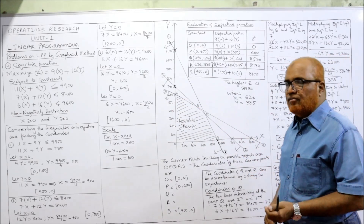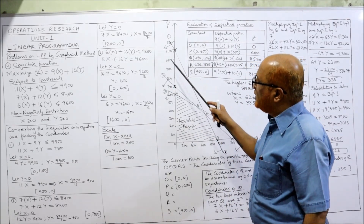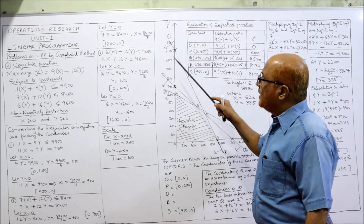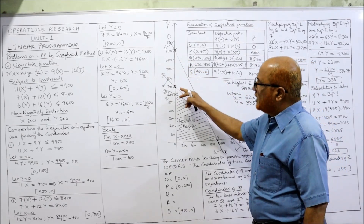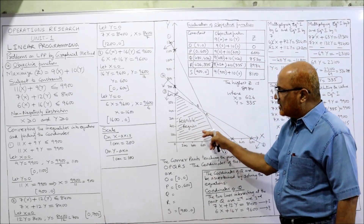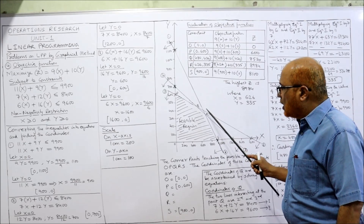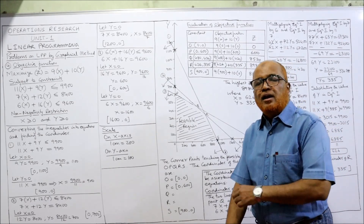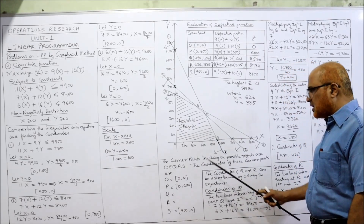All the lines are less than or equal to, so all lines point with a downward arrow toward the origin. This line says the feasible region is downward, this line says it is down, and this line says it is down. So the shaded region is the feasible region. The corner points touching the feasible region are O, P, Q, R, and S.